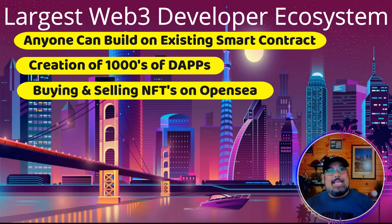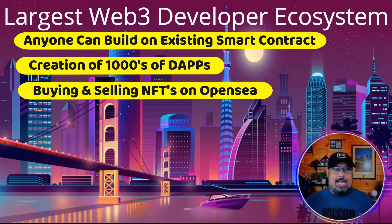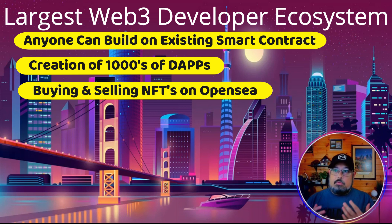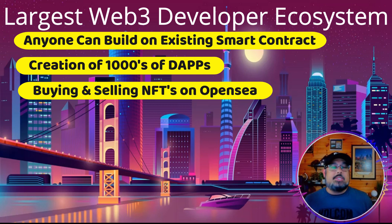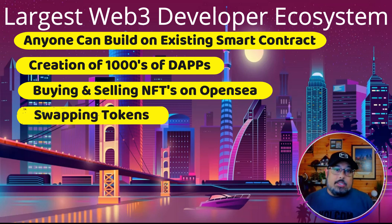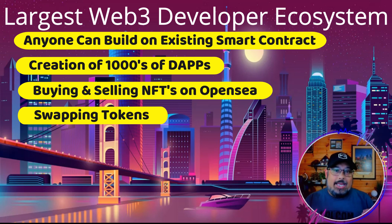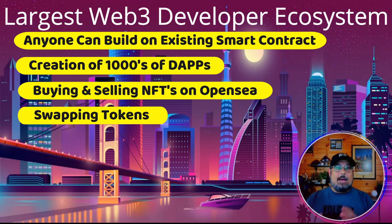Buying and selling NFTs on OpenSea — that's something you're seeing and hearing about a lot now. Most NFT projects use the Ethereum blockchain, though some use Polygon and others. Swapping tokens — like Uniswap, which is a DEX, a decentralized exchange. That is a layer two project built on top of the Ethereum blockchain.